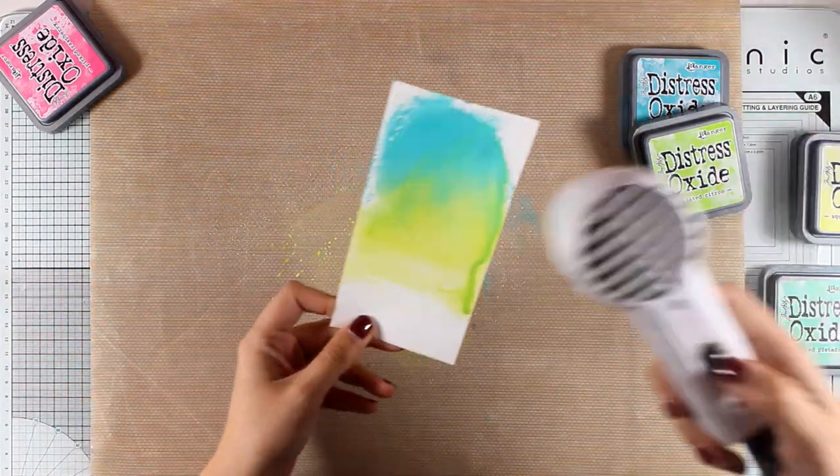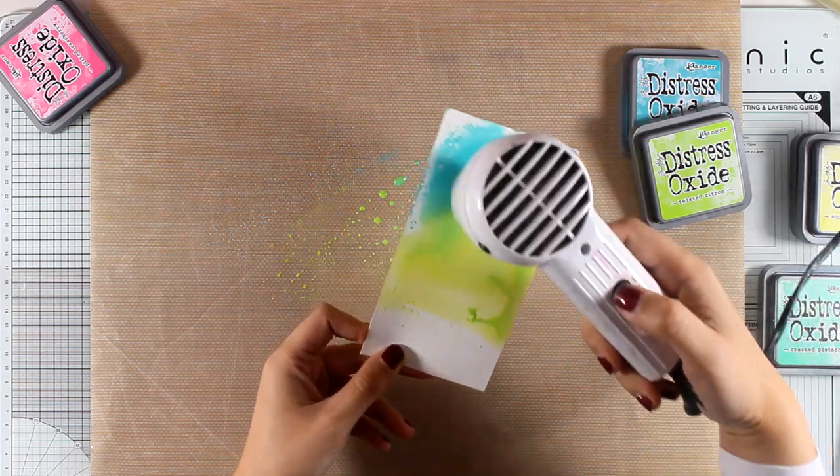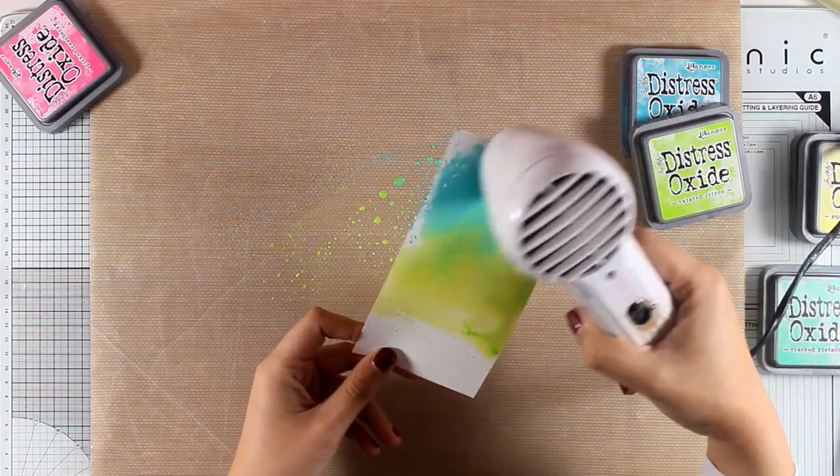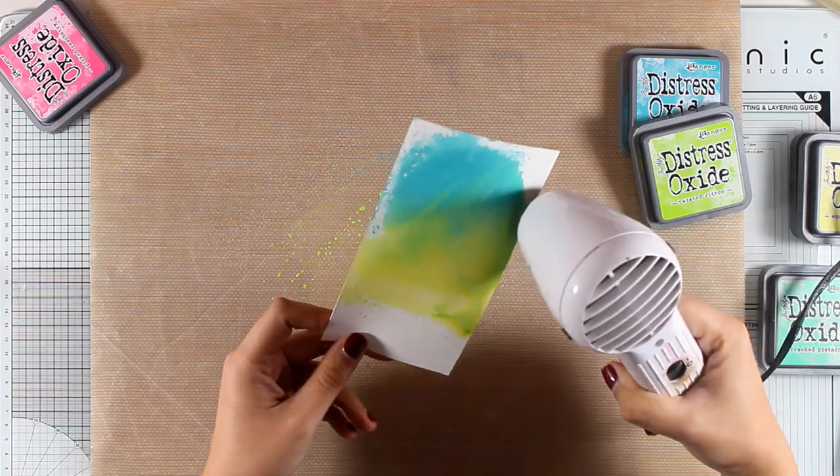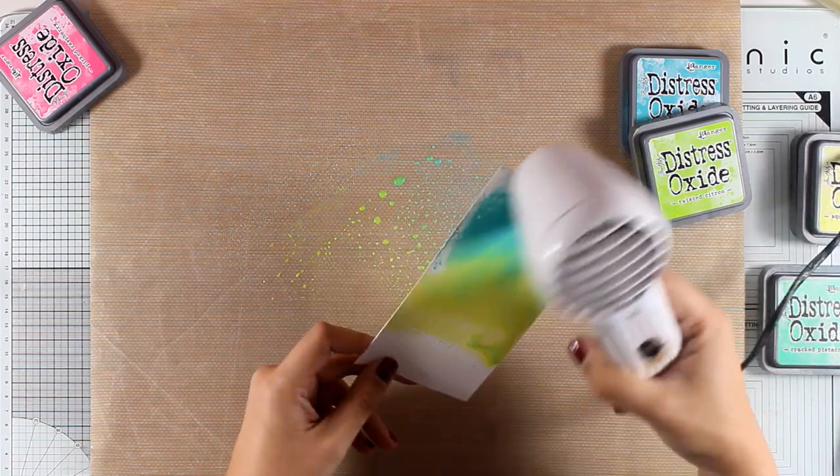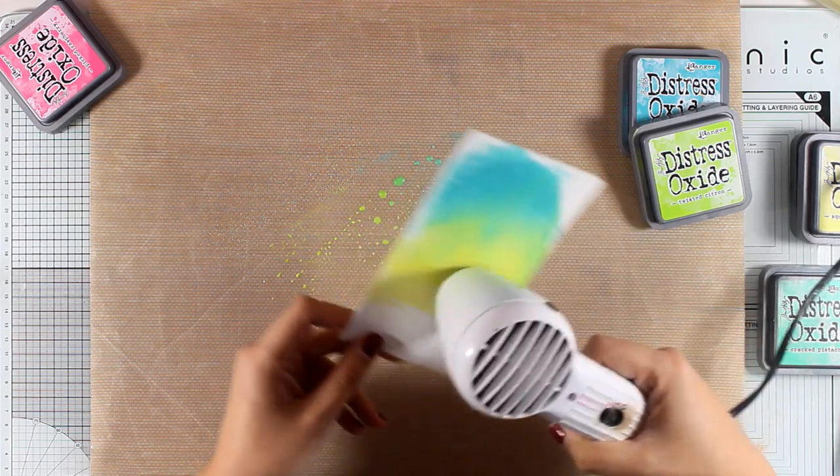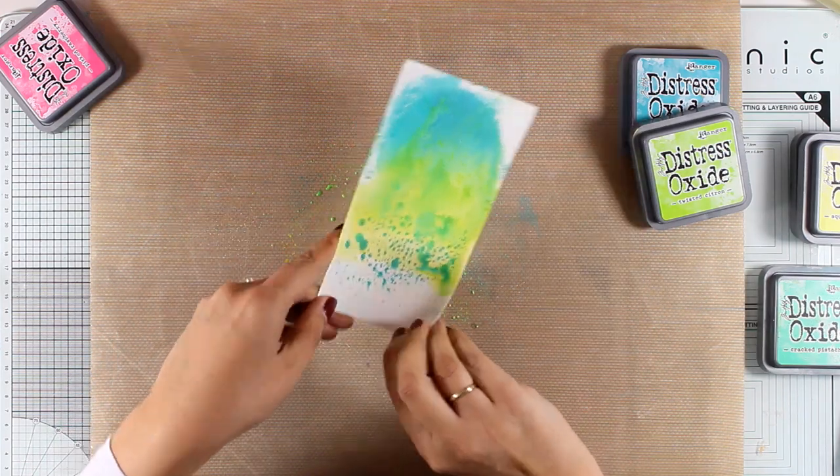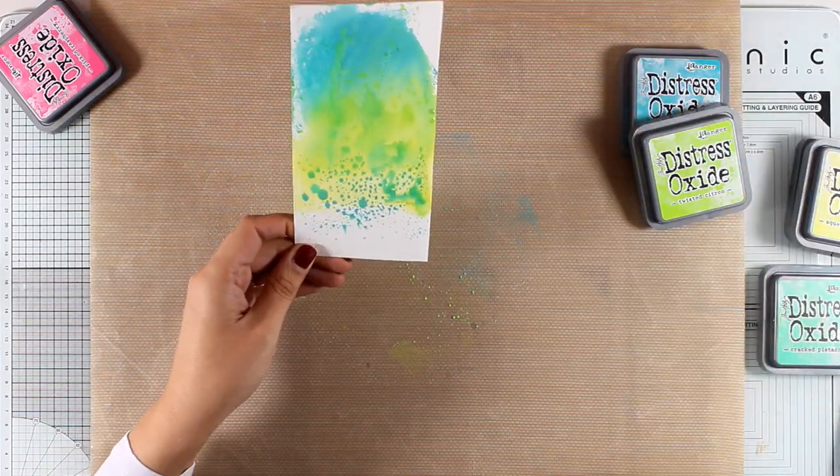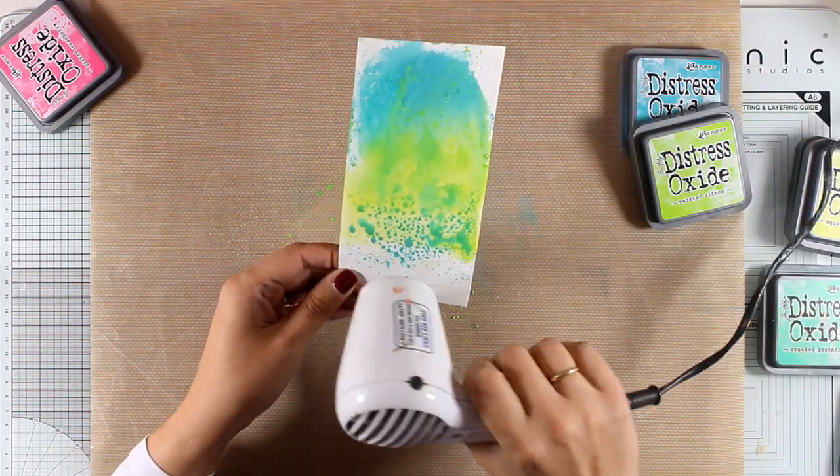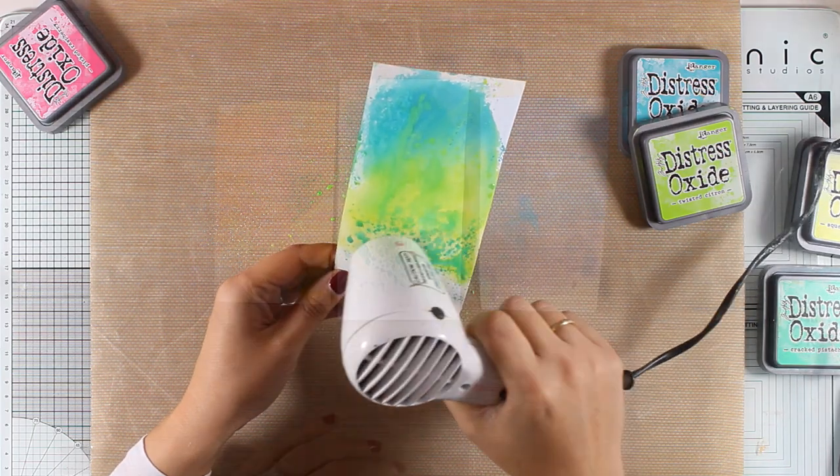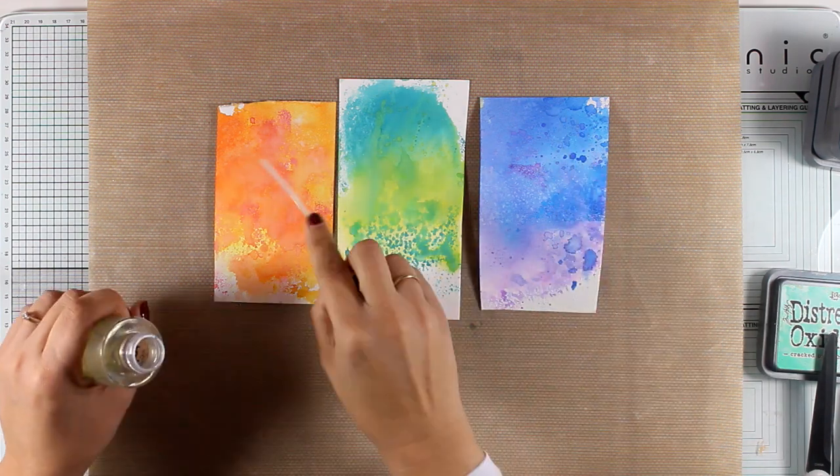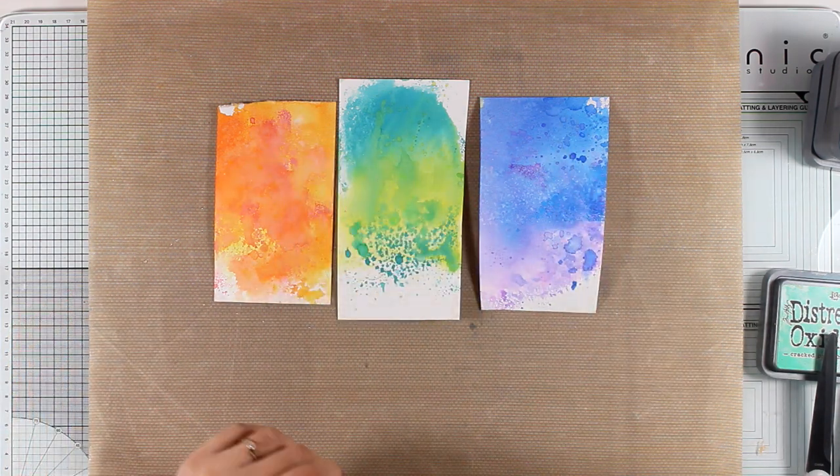I'm working on heavy watercolor paper, this is actually cold pressed watercolor paper that takes distress oxide inks beautifully. For the first paper that I created I used three colors: squeezed lemonade, spiced marmalade and worn lipstick. For this one I'm creating now I'm using peacock feathers and twisted citron, and I just love this combination.